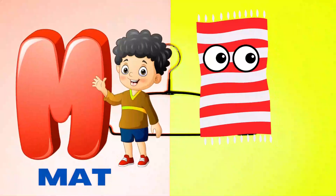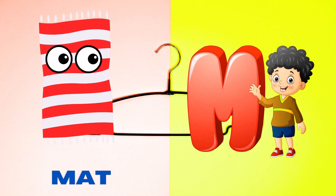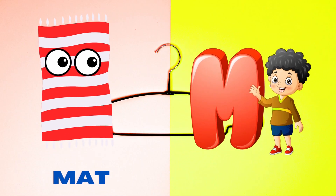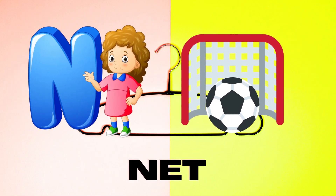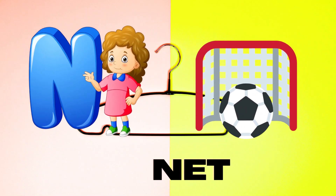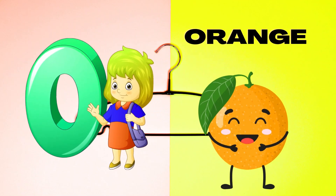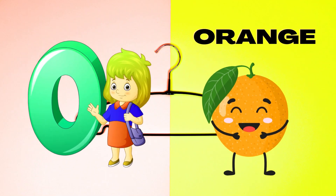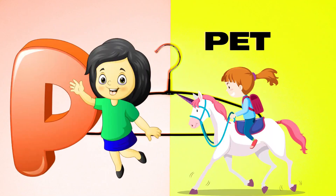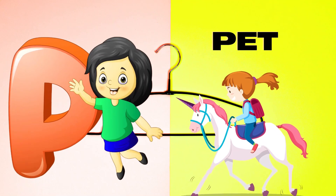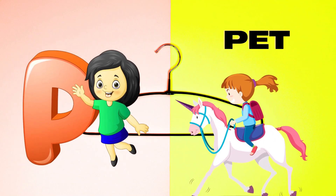M is for Mat, M-M-Mat. N is for Net, N-N-Net. O is for Orange, O-O-Orange. P is for Pet, P-P-Pet.